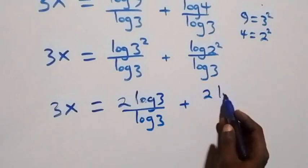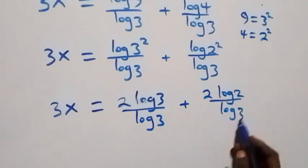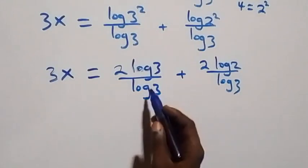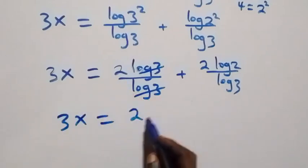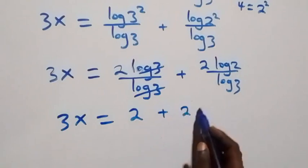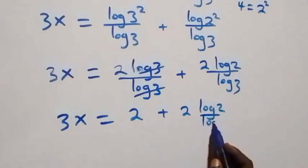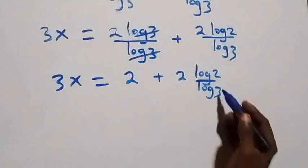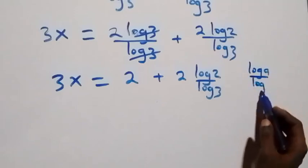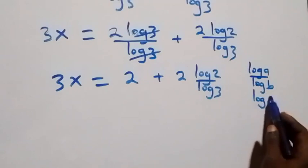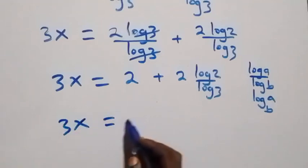Applying the power log rule, this gives 2 log 3 over log 3 plus 2 log 2 over log 3. Then applying the change of base formula — log a over log b equals log base b of a — we have 3x equals 2 plus 2 log base 3 of 2.